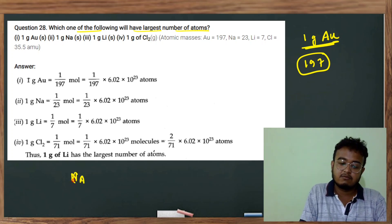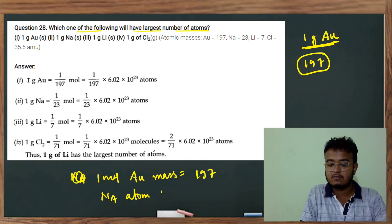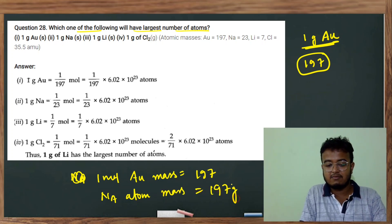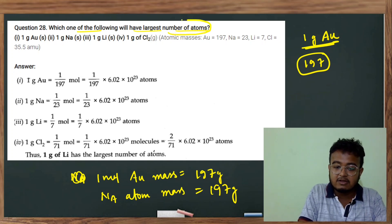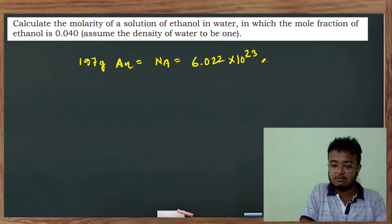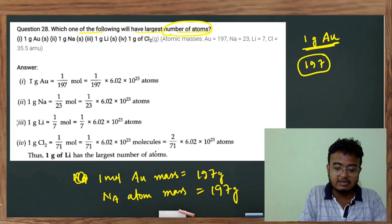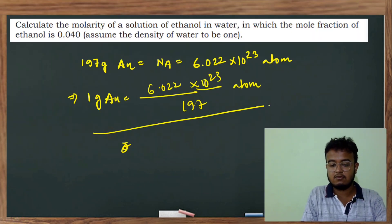1 mol of Na atoms has a mass of 197 grams. For 1 gram of gold: 197 grams of Na gives 6.022 × 10^23 atoms, so 1 gram gives 6.022 × 10^23 divided by 197 atoms. Therefore, 1 gram of gold has 1/197 moles of atoms.